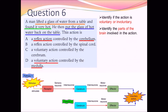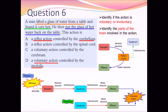Question 6 is about the story of a man who lifted a glass of water from a table, found it very hot, and then put the glass of hot water back on the table. From this story, you need to identify if this action is voluntary or involuntary — this is very critical. Answers A and B say it is a reflex action; answers C and D say it is a voluntary action. You also need to identify the parts of the brain or nervous system involved, as shown in the diagrams — the reflex action diagram and the voluntary action diagram with pathway one and pathway two.